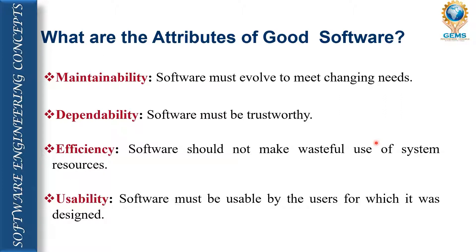The fourth attribute is usability. Apart from these four, there are many other attributes of good software, but here we discuss only four. Usability means: for what purpose I designed the software, am I able to use it properly? If I am able to use it properly, then we can say this software is really useful.